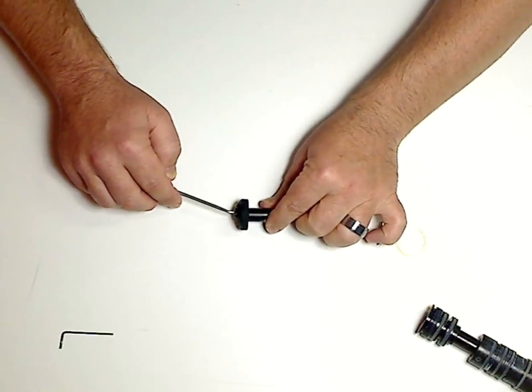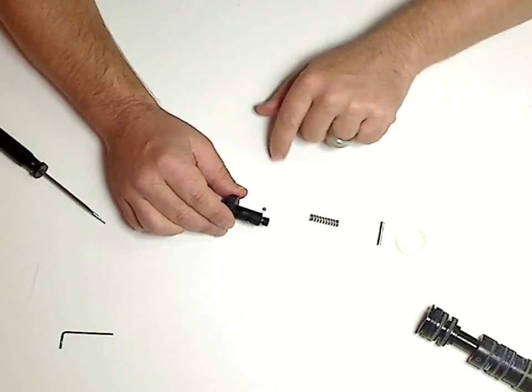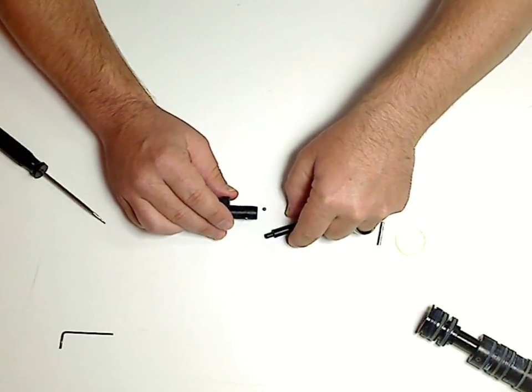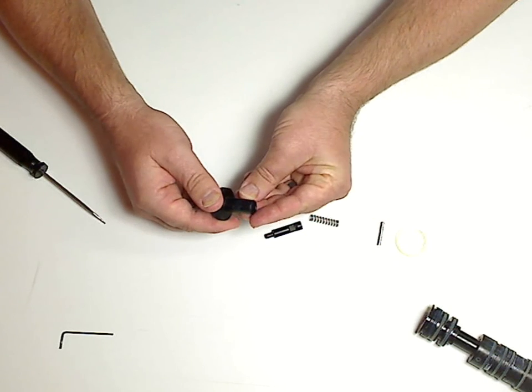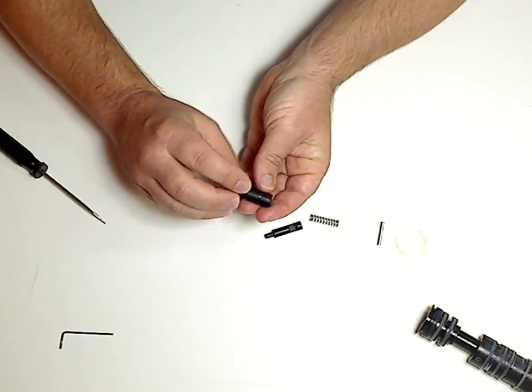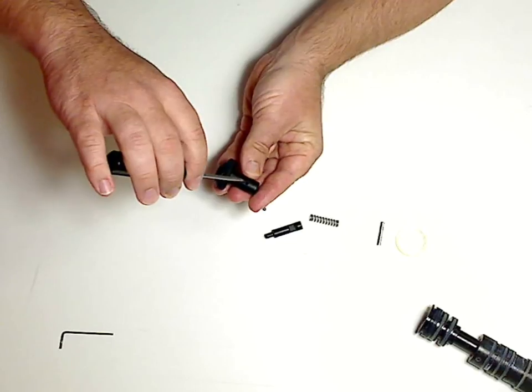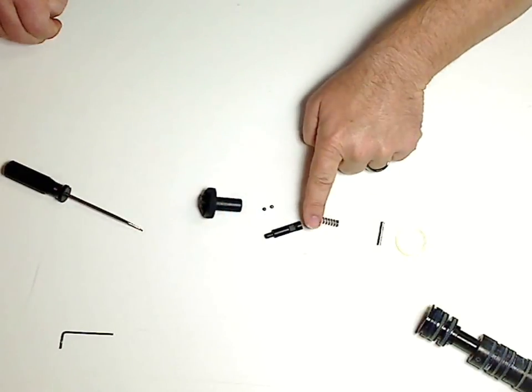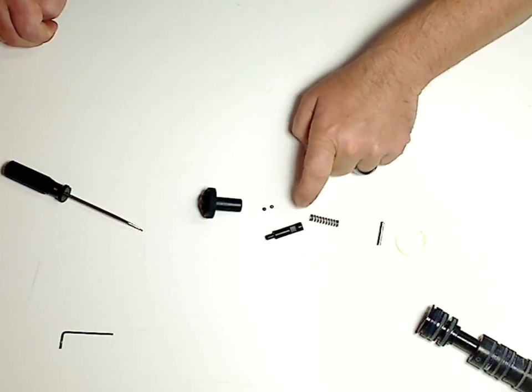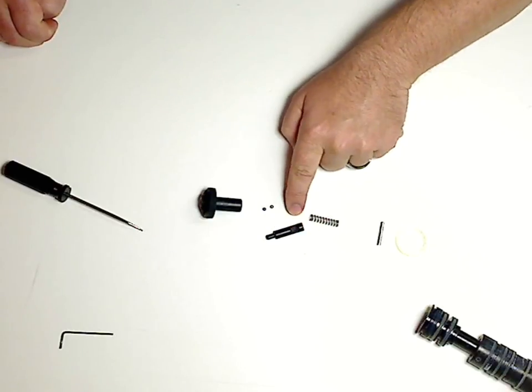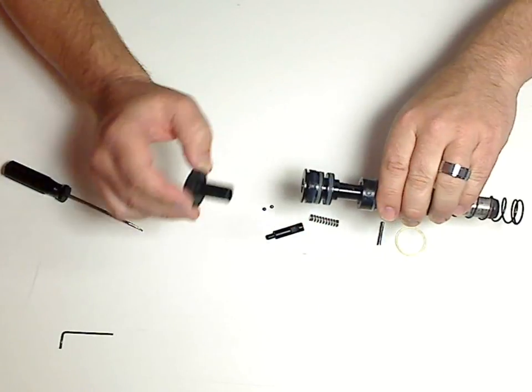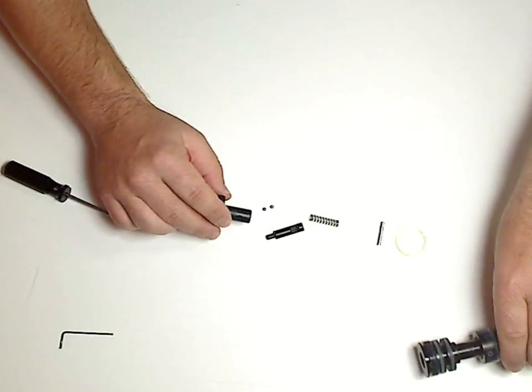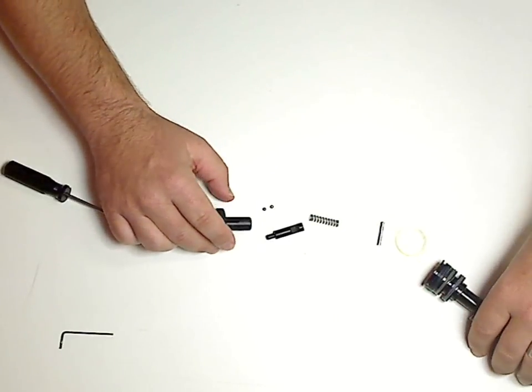So as this pin comes out you see that they'll start to drop away. There's nothing really holding those in place other than the pin from the inside, or plunger. Plunger from the inside and then when you insert the cap into the base they're held in there. Other than that there's nothing pulling them in.